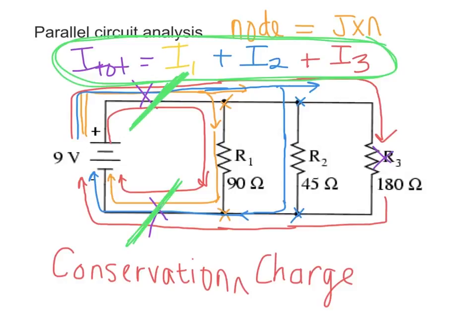So, R3 would have, the red one would have the least current, R1 would have the next least current, and R2 would have the most current, most current because it has the least resistance.